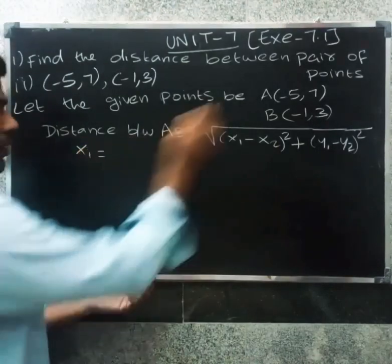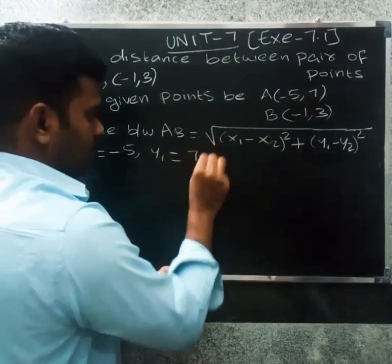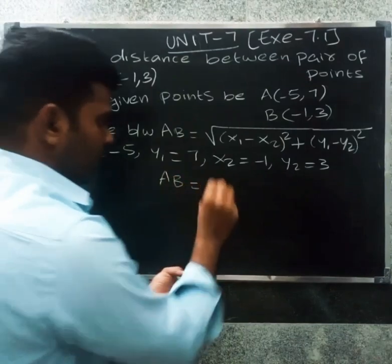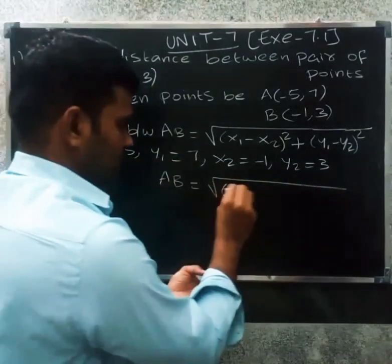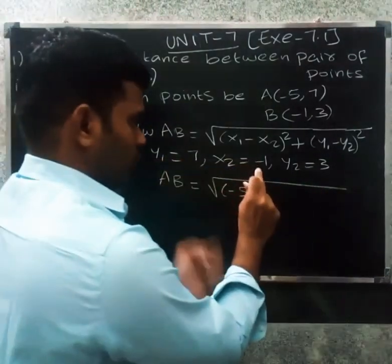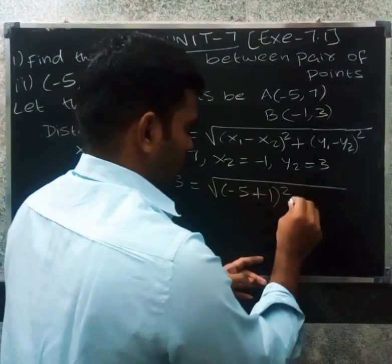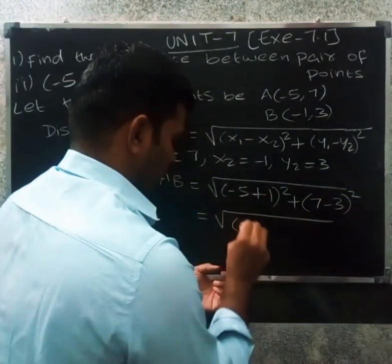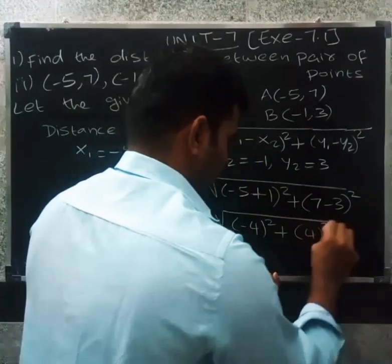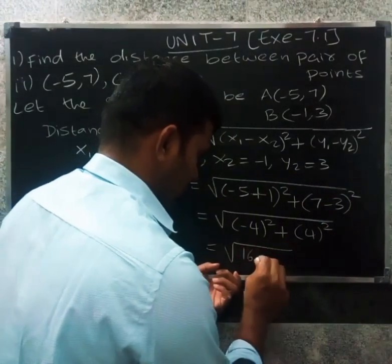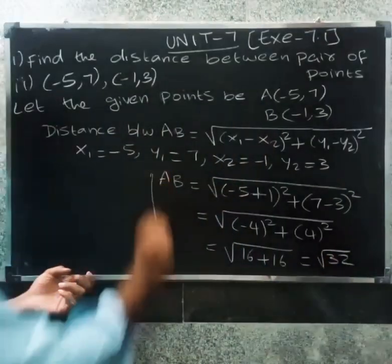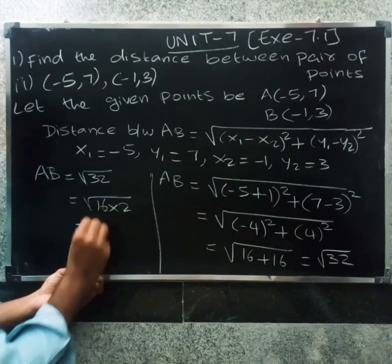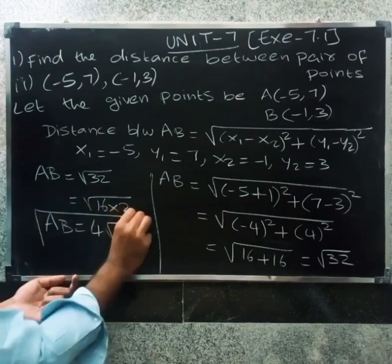Here, x1 = −5, y1 = 7, x2 = −1, y2 = 3. Substituting: AB = √[(−5 − (−1))² + (7 − 3)²] = √[(−5 + 1)² + (4)²] = √[(−4)² + 16] = √[16 + 16] = √32 = √(16 × 2) = 4√2. So distance AB = 4√2.